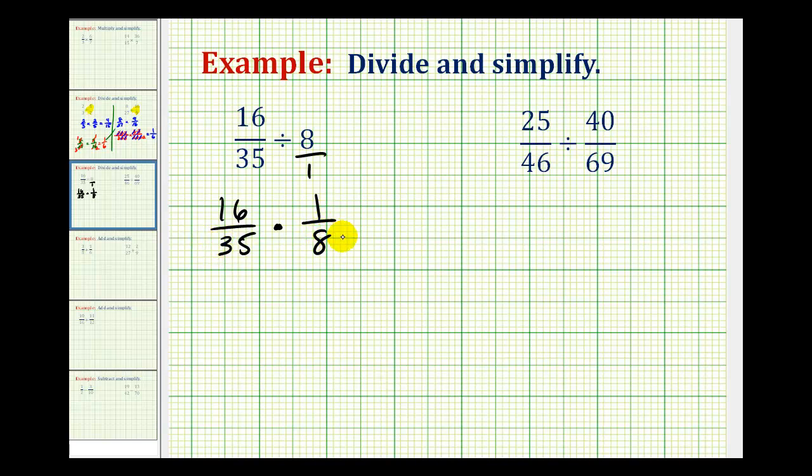And now before we multiply, we want to simplify. This one's pretty straightforward to simplify. If we notice that eight and 16 have a common factor of eight, instead of writing everything in prime factored form, we could take a shortcut and just write 16 as two times eight, leave 35 the way that it is, leave 8 the way that it is, and now we can identify the common factor of eight here that's going to simplify to one.